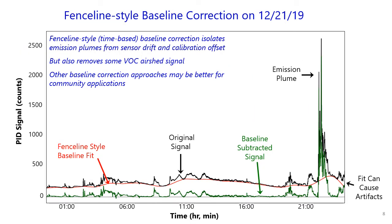A temporal-style baseline correction can be used on fenceline data to eliminate drift from environmental conditions and calibration issues. The version that we use eliminates drift but leaves the peaks intact. This graph shows an original data set from December 2019 where the raw signal is the black line, the baseline correction algorithm is the smooth red line, and the signal with the baseline correction subtracted out is the final green line. You can see that the baseline drift envelope is eliminated while the plume is left intact in the green signal. This correction is a time series algorithm; there are other ways to correct baseline based on temperature or relative humidity. It's important to note that this style of baseline correction can remove real airshed VOC signal and can cause some artifacts in the data.